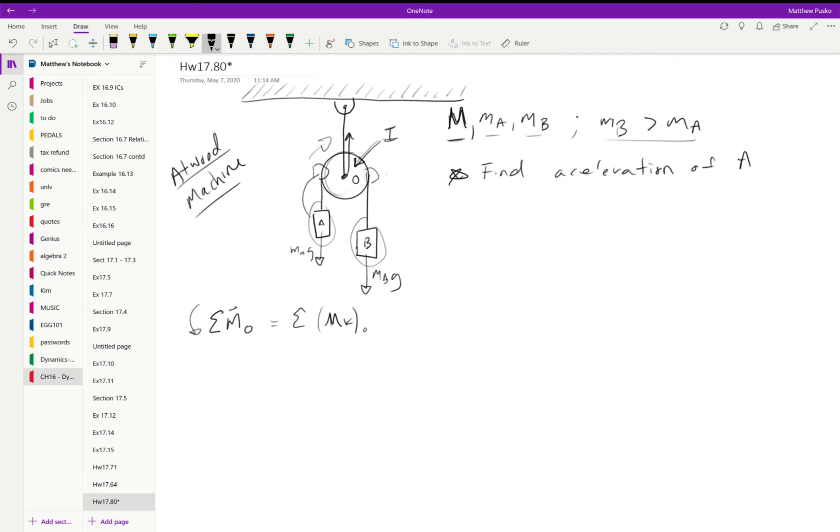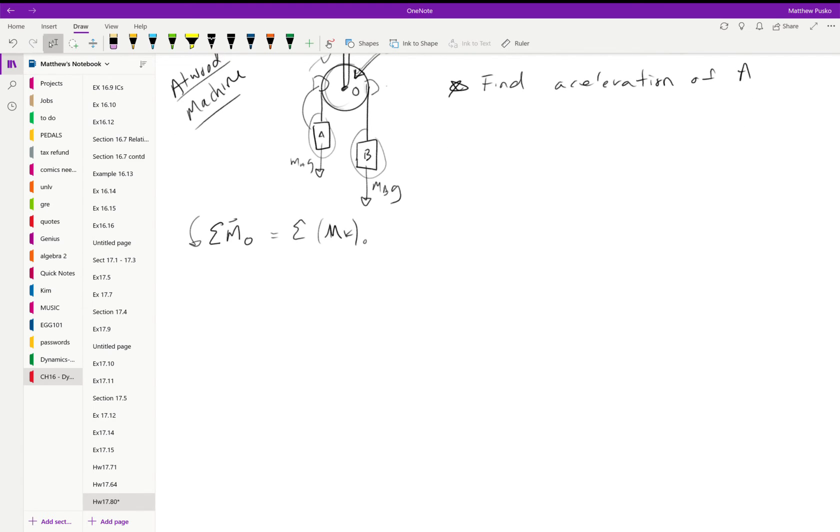Find the acceleration of A. Okay, let's start by summing the moments about O, and that's equal to the kinetic moments. I'll copy this one down just to explain one more thing. So that's always equal to I naught alpha, but then you have to consider anything else that has mass and is accelerating and acting at a distance.